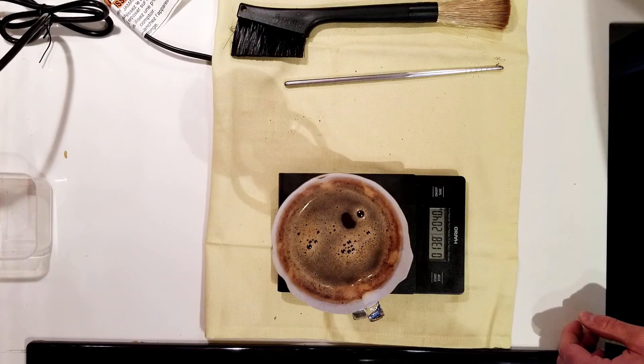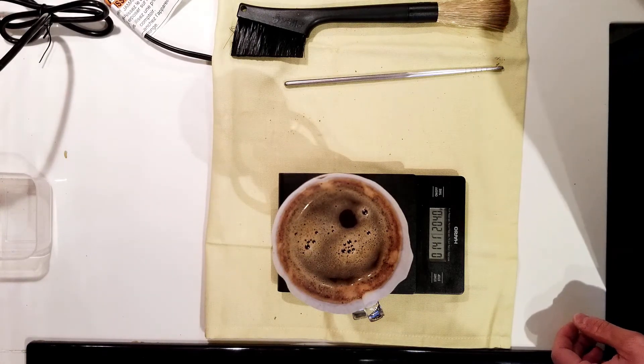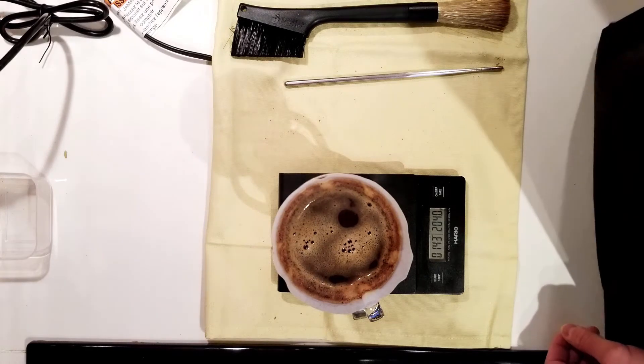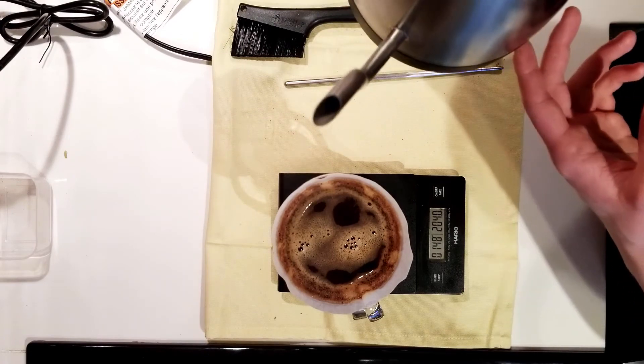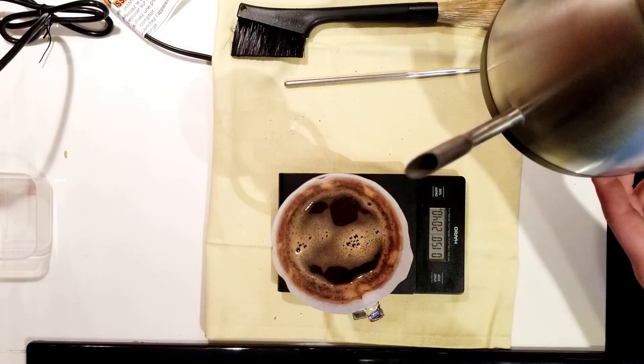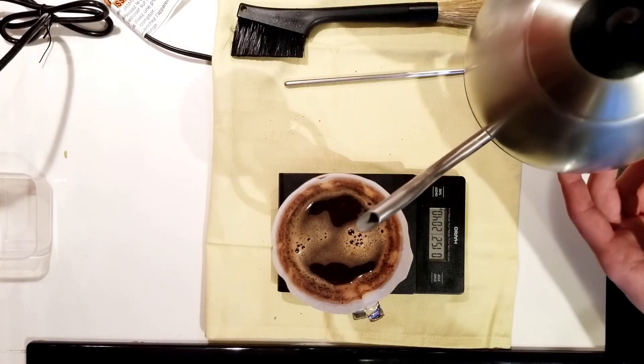I'll get my kettle back up to 210 degrees and we start pouring our next chunk of water all the way up to our goal of 374 which I should have actually done less because we started with 21.5 but that's fine.